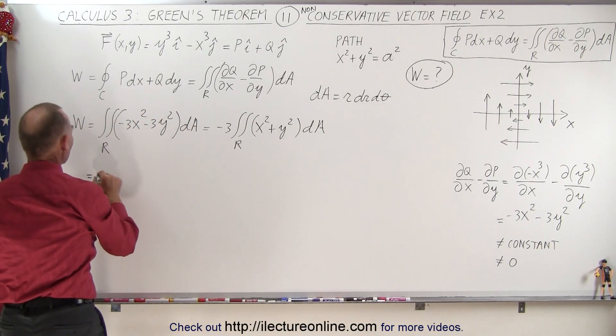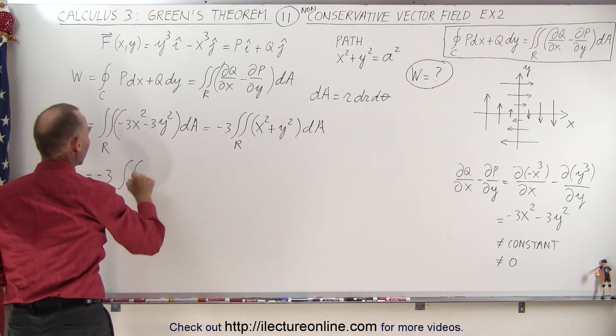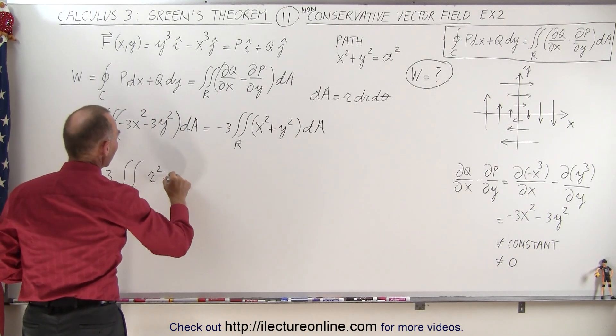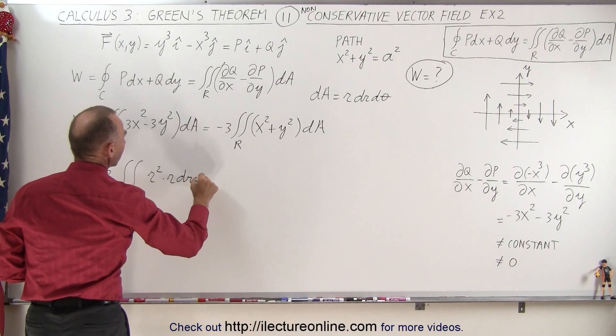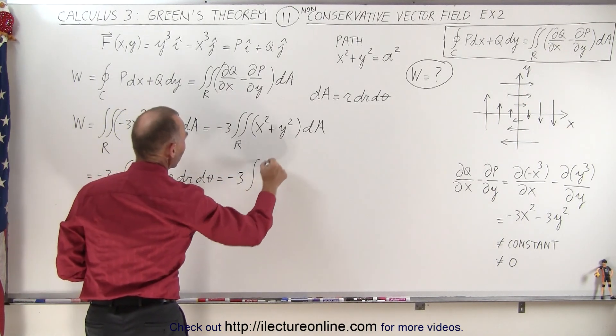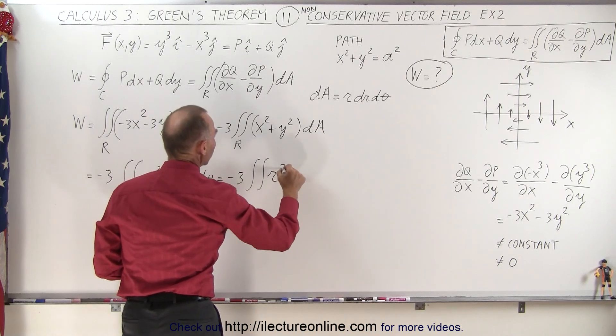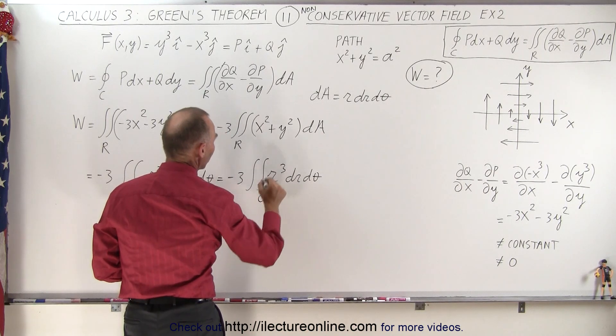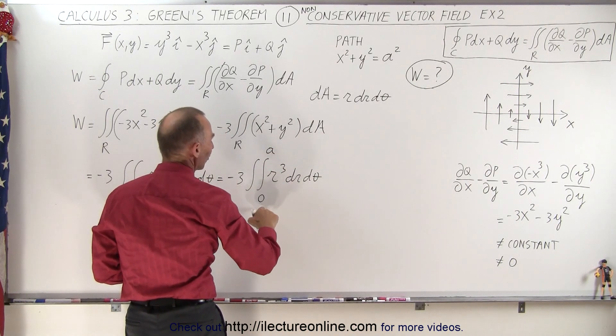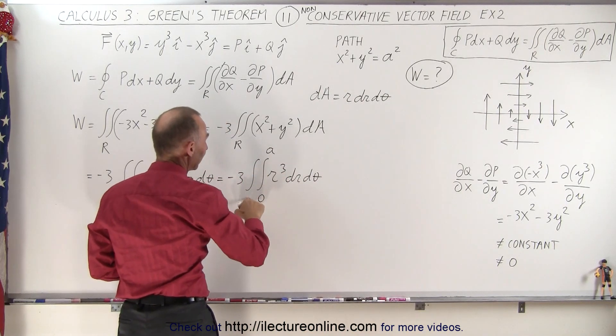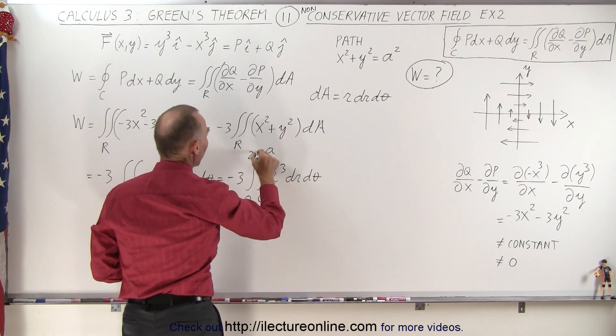This then becomes equal to minus 3 times the double integral of r squared times r dr d theta, which is equal to minus 3 times the double integral of r cubed dr d theta. And r will be integrated from 0 to a, that's from the origin to the radius of the circular path, and theta from 0 to 2 pi.